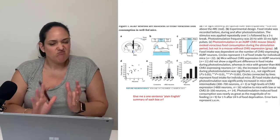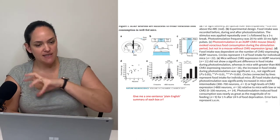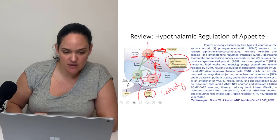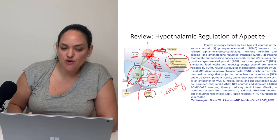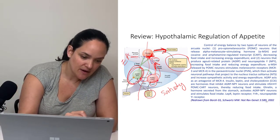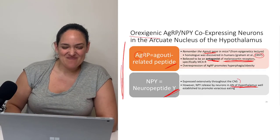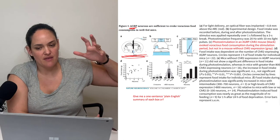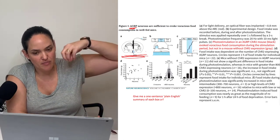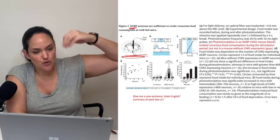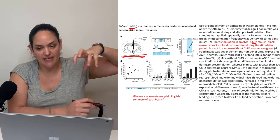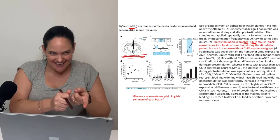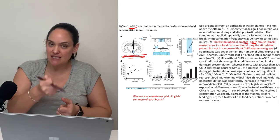Breaking this down: the AGRP neurons are the ones that are part of the 'eat' pathway — the hunger pathway, the 'give me more food' pathway that promotes voracious eating. An optical fiber is implanted into the arcuate nucleus to stimulate those channelrhodopsin-expressing AGRP neurons, so we can figure out what these neurons actually do.